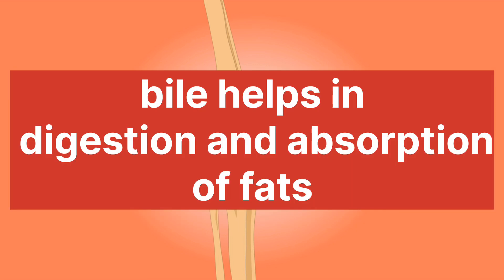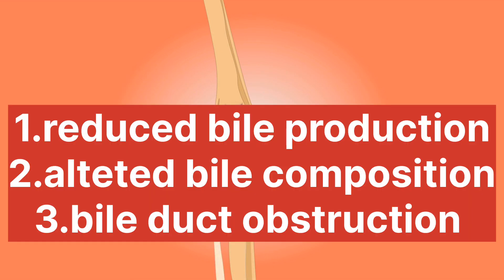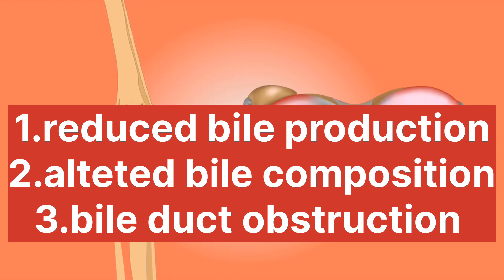Number nine: effect on bile secretion. The liver produces bile, a fluid that plays a crucial role in digestion and absorption of fats. When the liver is damaged, this can lead to problems such as reduced bile production, altered bile composition, and bile duct obstruction. These disruptions can lead to nutritional deficiency and related health issues.